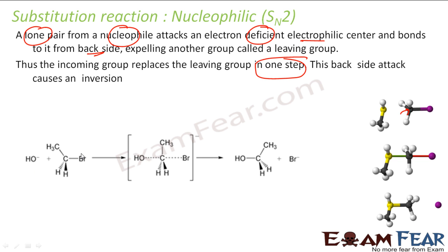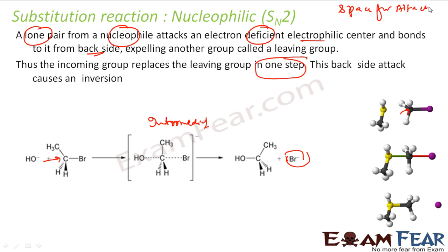Here, OH minus is attacking and Br is the leaving group. We have H-H on the carbon, so steric hindrance is less and OH minus can attack from the back side. An intermediate is formed during the attack, then bromine leaves because bromine is a good leaving group. So two factors are mandatory: there must be space for back-side attack, and the leaving group must be a good leaving group.